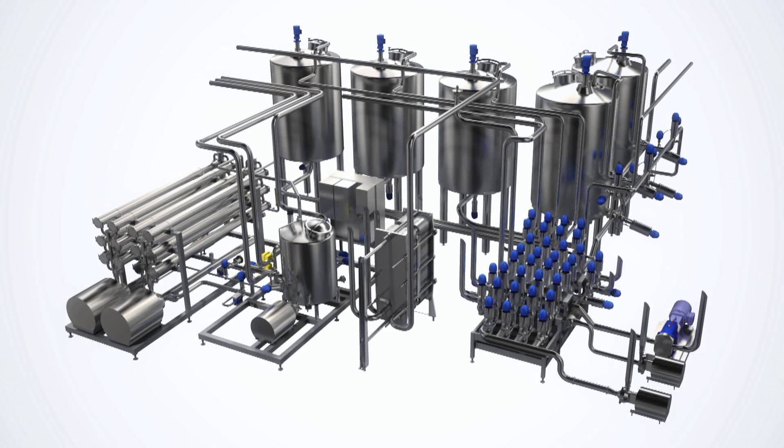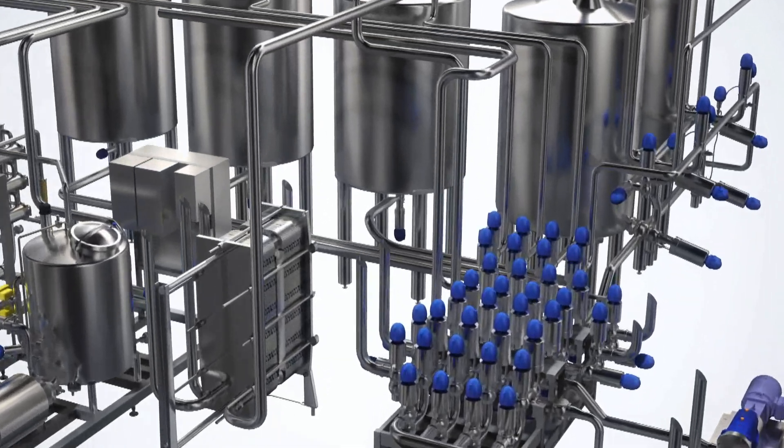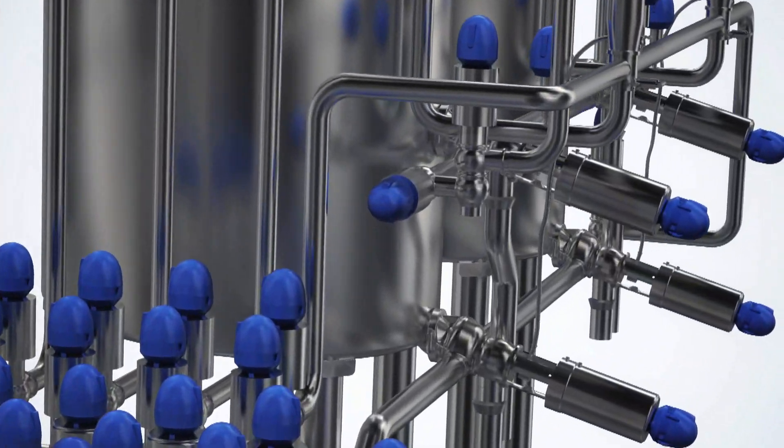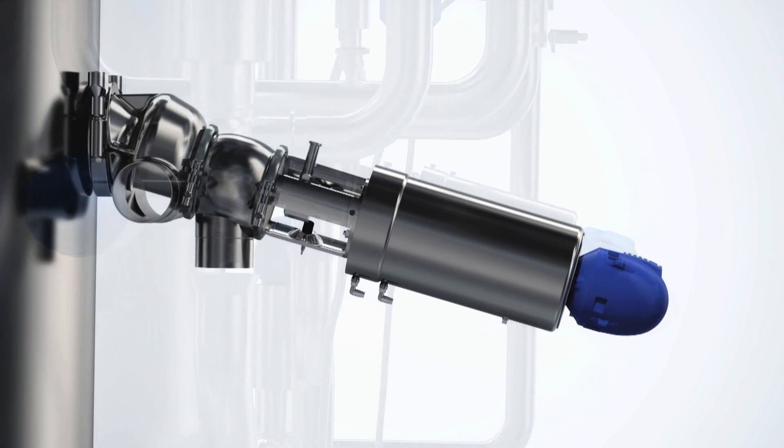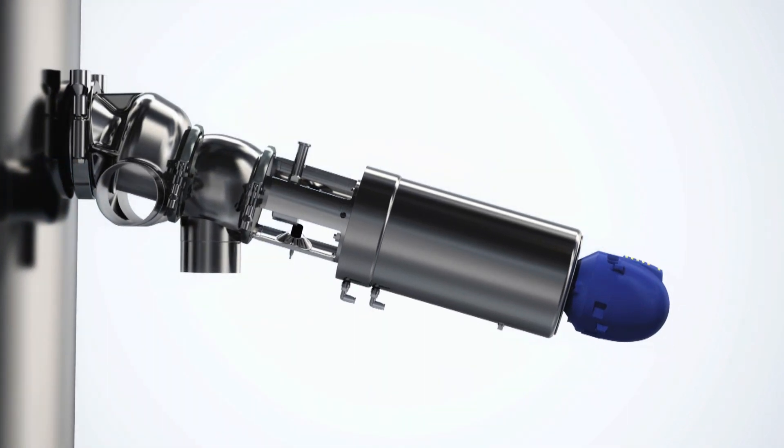The Alpha Laval unique mixed-proof horizontal tank valve is specially designed for horizontal mounting on the side of a tank or as a space-saving alternative at the bottom of a cone-formed tank.